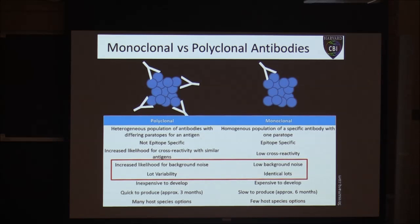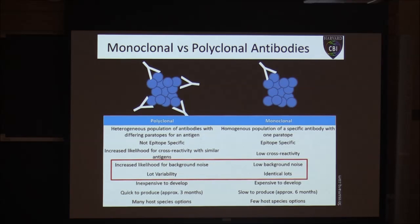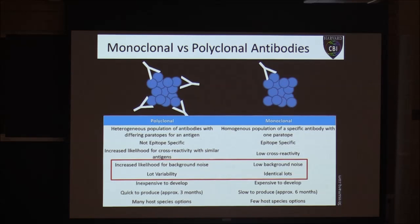Every time you do an antigen challenge into the animal, you make a different set of polyclonal antibodies — they're never the same. Also, because you're making many different antibodies, there's a bigger chance for cross-reactivity. With monoclonals you only have one antibody that might cross-react with other proteins. But with polyclonals, each of many different antibodies may have its own cross-reaction profile, leading to a much larger increase in background noise or non-specific staining.